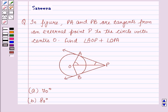Hello and welcome to the session. In this session we will discuss a question which says that in the figure, PA and PB are tangents from an external point P to the circle with center O. Find angle AOB plus angle OPA.